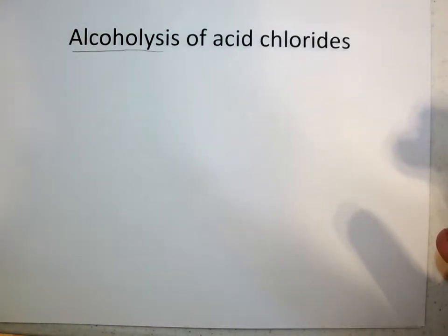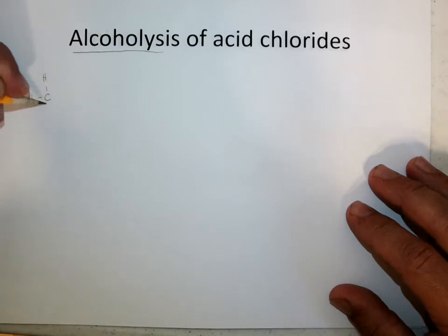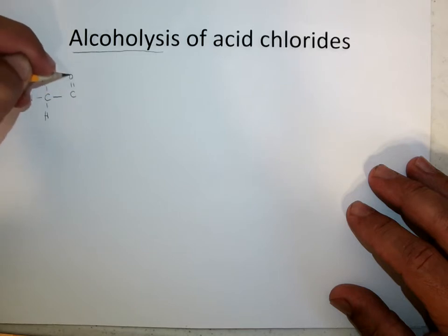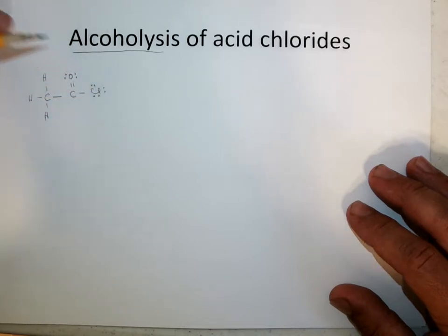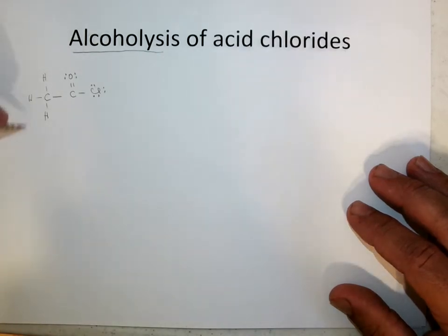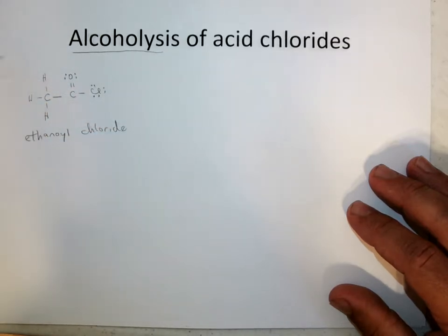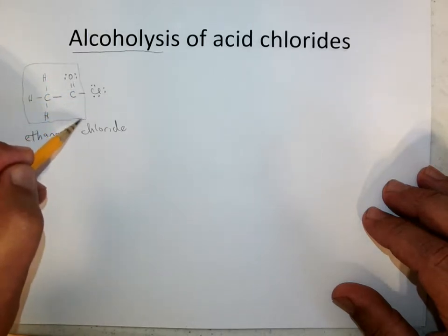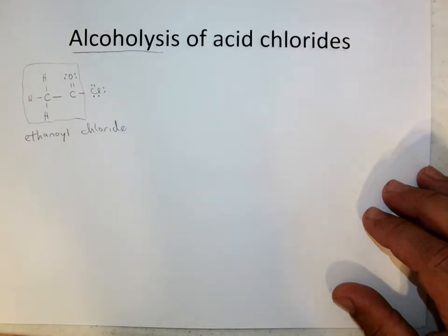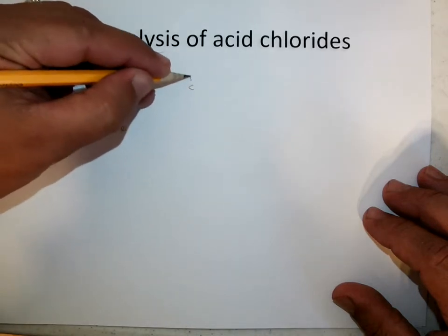We'll work through the mechanism and hopefully you'll see the extreme parallel. This is fully generalizable — you can have many different acid chlorides, acid bromides, or acid iodides, and many different alcohols. We're going to use ethaneoyl chloride as our starting material, which is a derivative of ethanoic acid — the ethaneoyl group plus the chloride. We'll add that to a fairly simple alcohol: methanol, CH3OH.